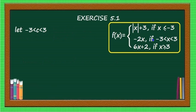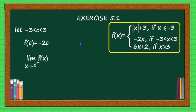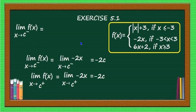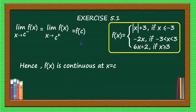For Case 3, c lies between -3 and +3: f(c) = -2c. For both c⁻ and c⁺, the function is defined as -2x, so the left-hand limit and right-hand limit are both -2c. Since the limit equals the value of the function, the function is continuous when c lies between -3 and +3.